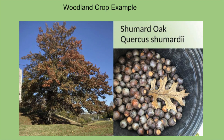One example of a native plant agricultural woodland crop is the Shumard oak, which can grow in slightly acidic soils but thrives in neutral to alkaline soils. It produces medium-sized acorns. Acorns are ground into flour, and the bitter tannins are leached out with cold water, which is the most effective method for retaining all the nutrients. The main products from oak flour are breads, pastries, cookies, and pancakes.